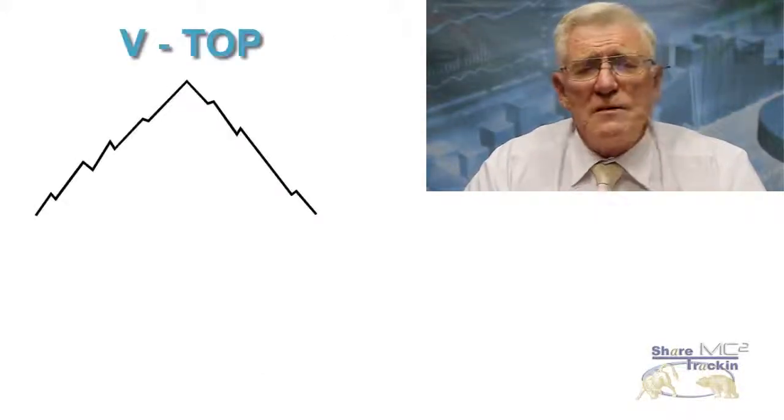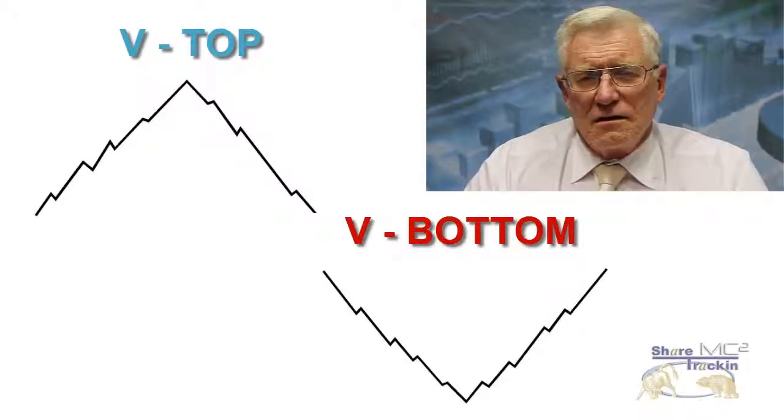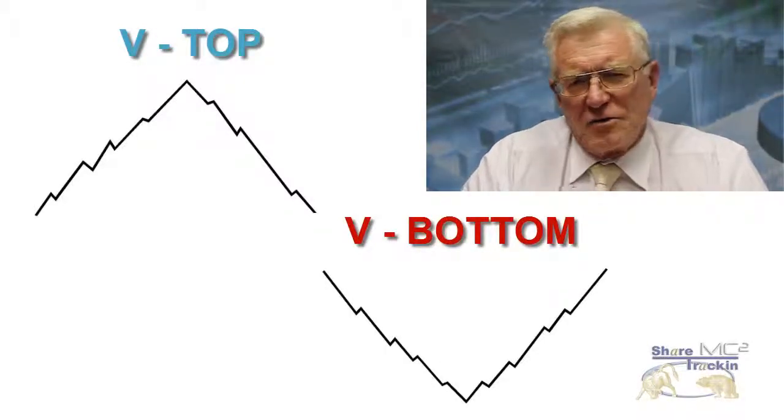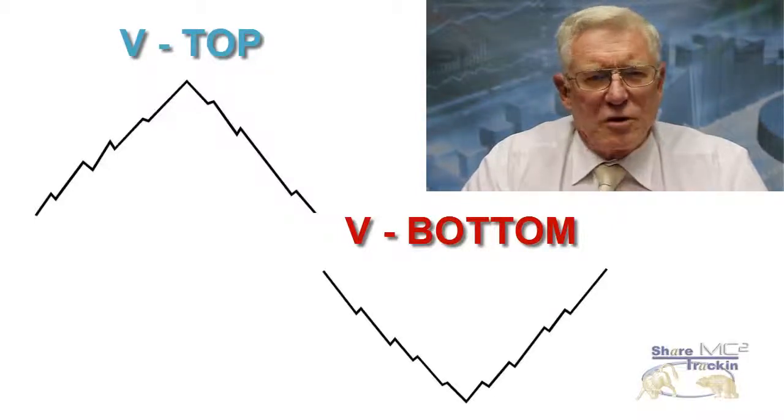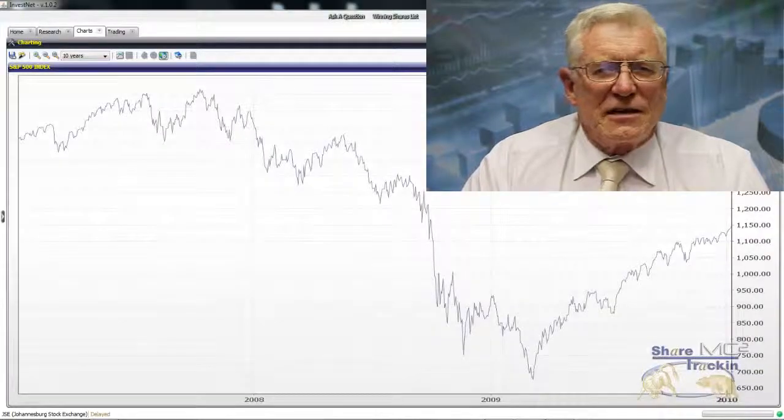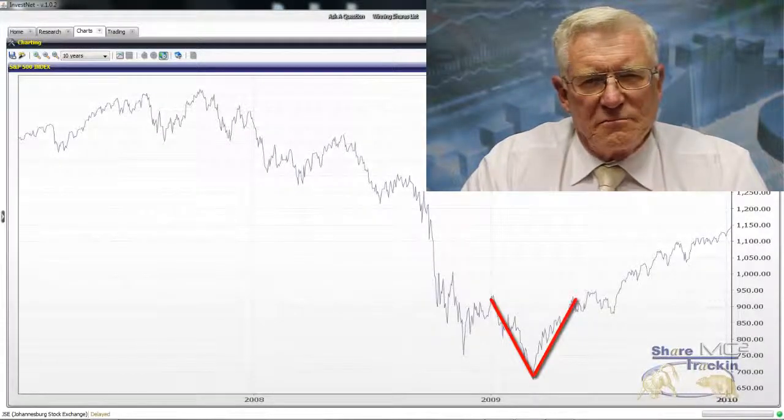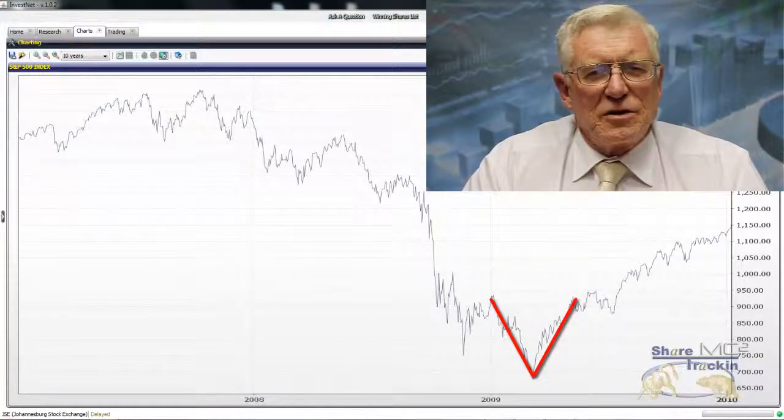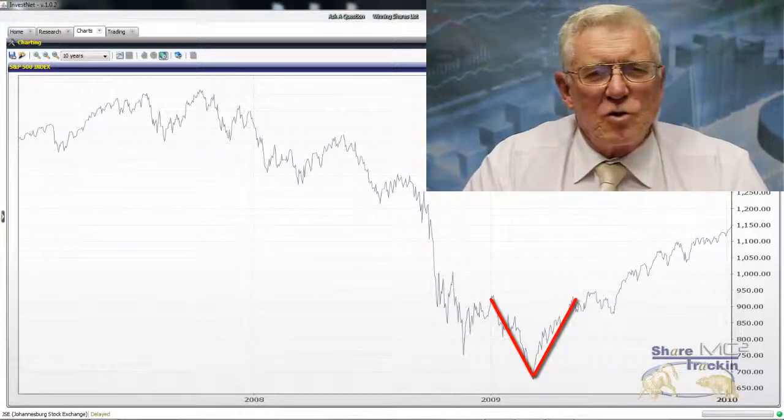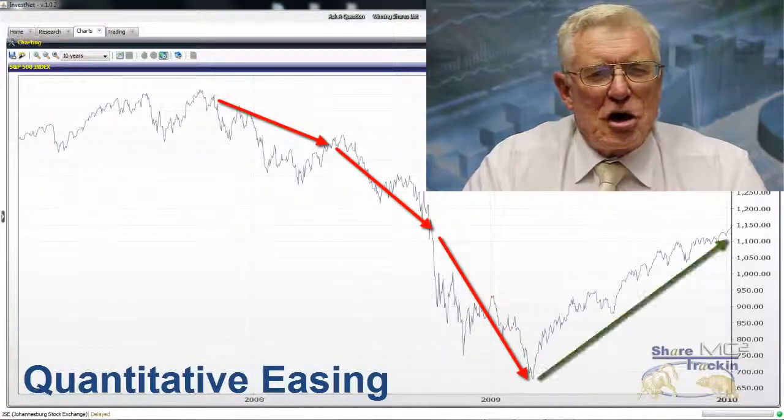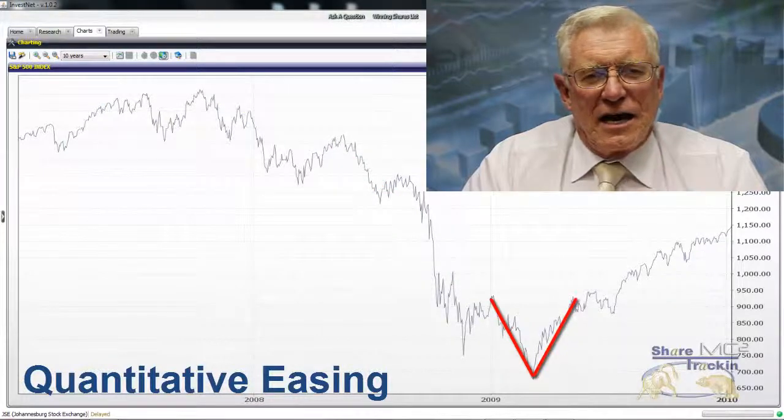Occasionally in the marketplace you will come across either a V-top or a V-bottom. This normally occurs because a central bank like the Federal Reserve Bank has interfered with the progress of the markets. In 2008 there was a very good example of a V-bottom, where the Federal Reserve Bank printed money through a program which they call quantitative easing, and the result of that was that the market turned very sharply and we had a V-bottom.